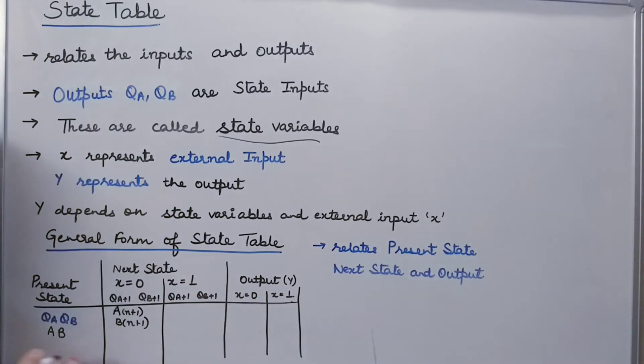So, what I can conclude from this introduction to the state table is that it relates the present state, the next state and the output, and which is playing the major role, the input, the external input, which either has a value of 0 or has a value of 1. Thank you so much.